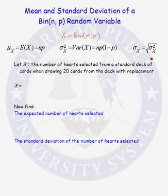Let's do an example. Let's let our random variable X denote the number of hearts selected from a standard deck of cards when drawing 20 cards from the deck with replacement.